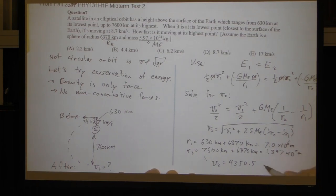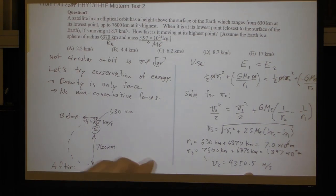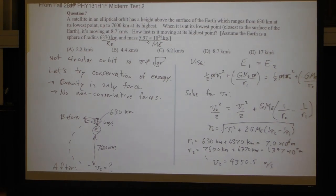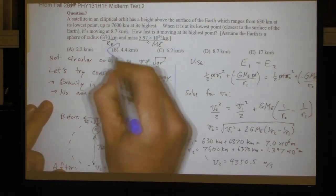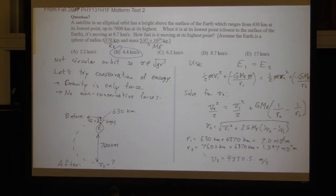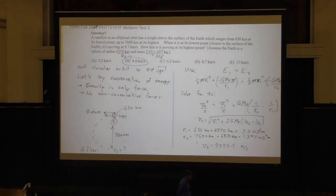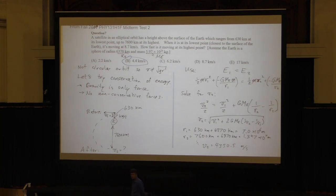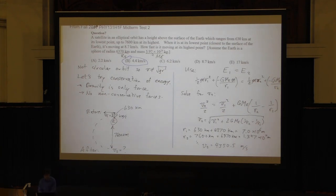Solving it all out, I get v2 equal to 4350.5 meters per second — all in SI units. It is fair to say that the professor likes to give a lot of conceptual questions on the multiple choice part, and also tends to put a couple of numerical-style questions on multiple choice, because this course is about solving problems.